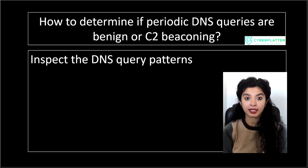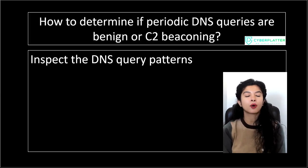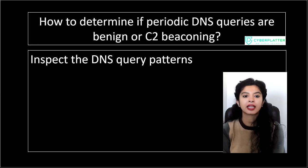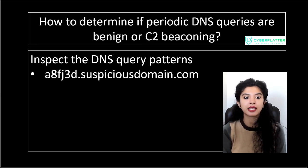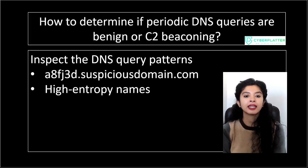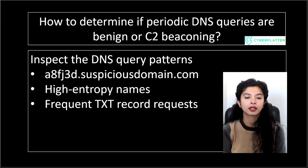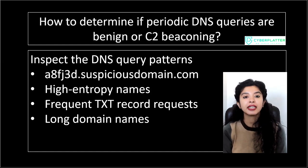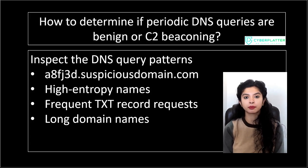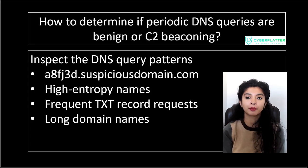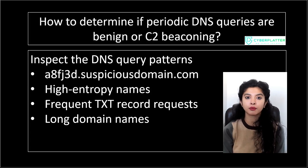Also look at the actual DNS queries themselves. C2 beaconing often has very recognizable patterns, like random-looking subdomains, high-entropy names that look encoded or auto-generated, frequent requests to TXT records which attackers sometimes use to hide commands, and very long domain names. In contrast, normal software tends to use predictable, readable domains like update.microsoft.com. If the DNS traffic looks messy, random, or encoded, that is a strong indicator of C2 activity.